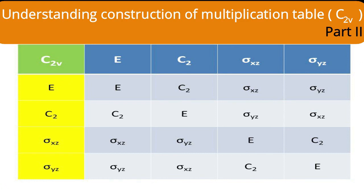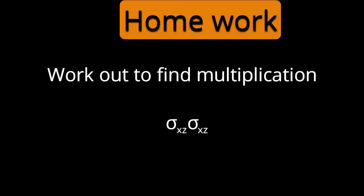Each position in the C2v multiplication table can be derived through these pictorial presentations. A homework exercise: work out σxz × σxz using the pictorial method shown, and write your answer in the comment box. The discussion of the multiplication table for the C2v point group is now complete. In the next video, we will discuss the multiplication table for the C3v point group and its derivation.